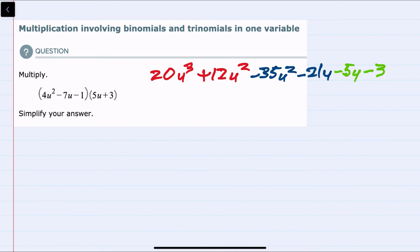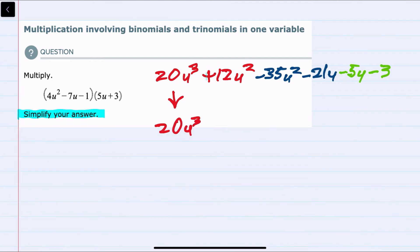However, we do need to simplify our answer, and we have some like terms here that we can combine. There's only one u³ term, so I'm just going to bring that down: 20u³. But we do have two u squared terms, and we can combine those. 12u squared minus 35u squared—we would subtract and keep the sign of the larger, so that's minus 23u squared.